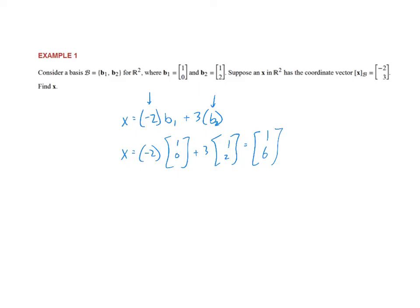That's where the vector x is, and that's actually where the vector x is relative to the standard basis. Relative to this different basis, that's where the vector x is, but they're actually the same place. That's what's great about it all. They lay on top of each other, but [-2, 3] is how I build x out of the basis vectors. [1, 6] is how I build x out of the standard basis.